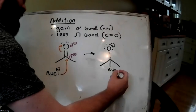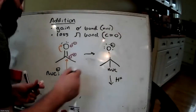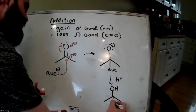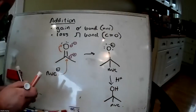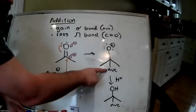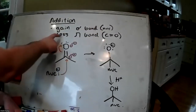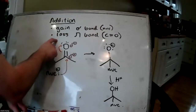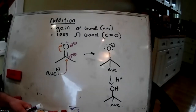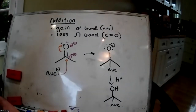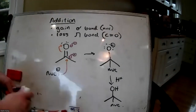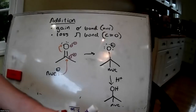In most cases, there's going to be a follow-up step where we protonate the O minus. So if we look at our definitions here, we gained a sigma bond between the carbonyl and the nucleophile, and we lost a pi bond between the carbon and the oxygen. This will be our generic reaction. What we're going to do is have a series of reactions where we change up who the nucleophile is and see what the nuances or differences are between all of these reactions.